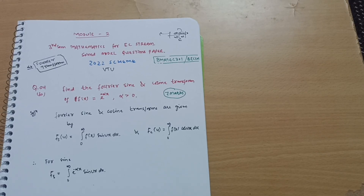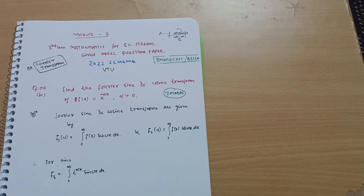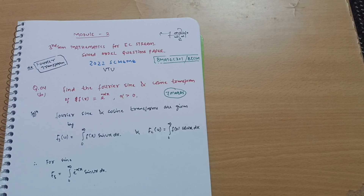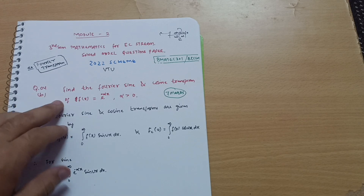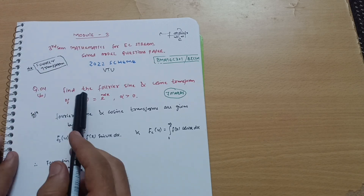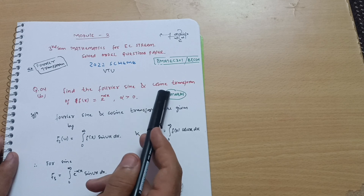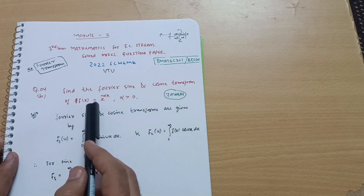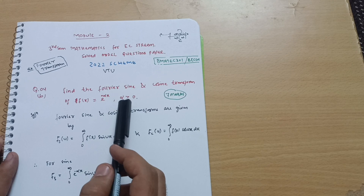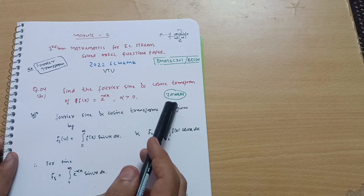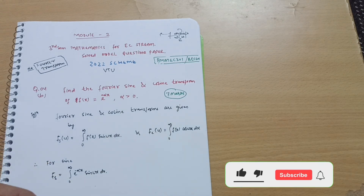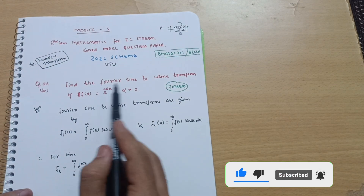Good morning everyone. Welcome back, hope you are all doing well. We are discussing the model question papers of the mathematics subject for third semester students, especially for the EC stream. This is the solid model question paper, question number 4b, on the Fourier transform — model 2. Find the Fourier sine and cosine transform of f(x) = e^(−αx), where α > 0. This is a seven marks question you should not leave, as it is purely formula-based.